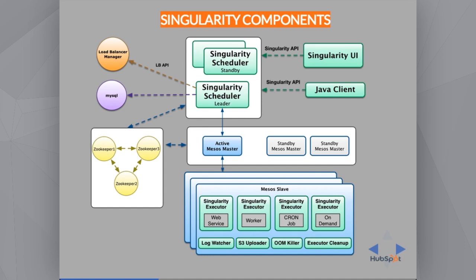You can run the scheduler in high availability mode. We reuse the ZooKeeper quorum and also use ZooKeeper to get the state of the active running tasks that Singularity manages. ZooKeeper is not a database, so when tasks die and complete, we move all historical information to a MySQL database where it is always available.